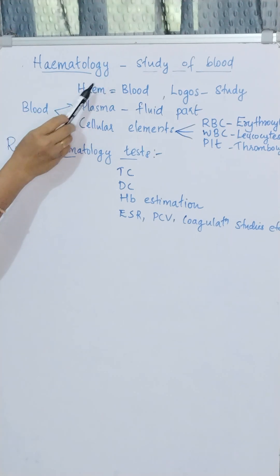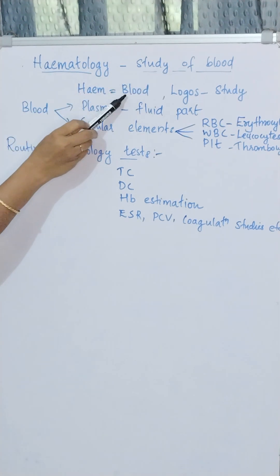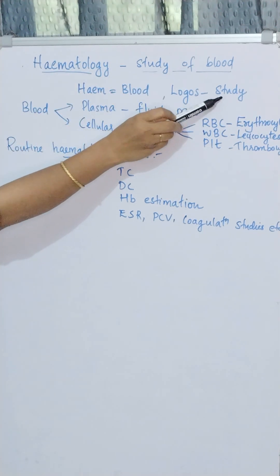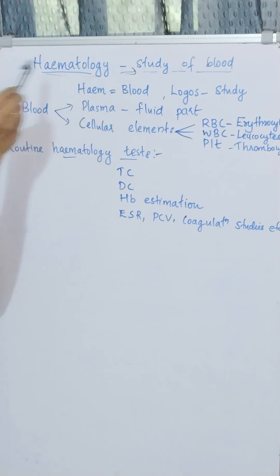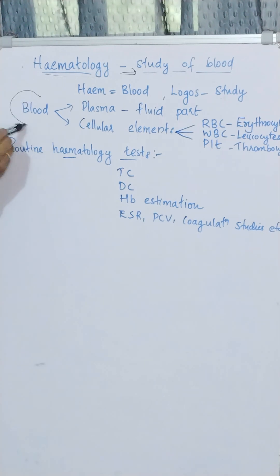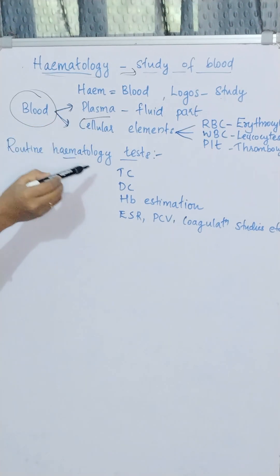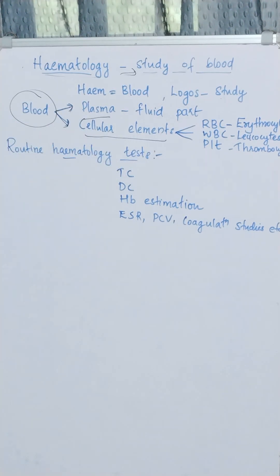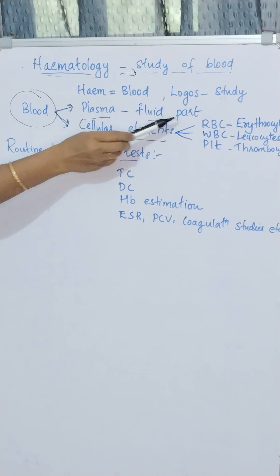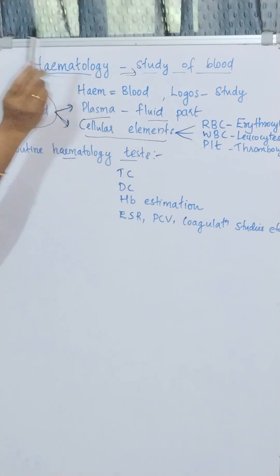Hematology is the study of blood. 'Heme' means blood and 'logos' means study. Blood is a complex fluid which circulates throughout the body in closed channels called blood vessels. Plasma is the fluid part and the solid part comprises cellular elements, which consist of RBC or erythrocytes, WBC or leukocytes, and platelets or thrombocytes.